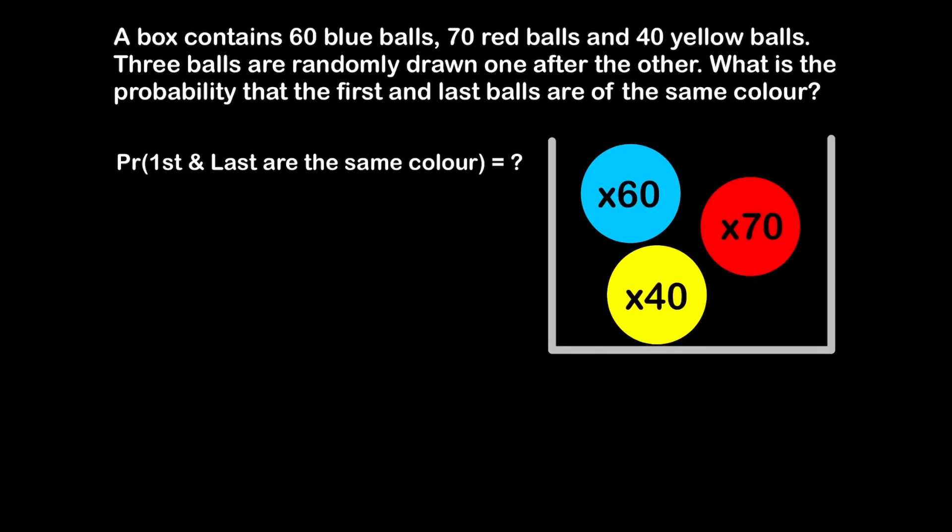A box contains 60 blue balls, 70 red balls, and 40 yellow balls. Three balls are randomly drawn one after the other. What is the probability that the first and last balls are of the same color?